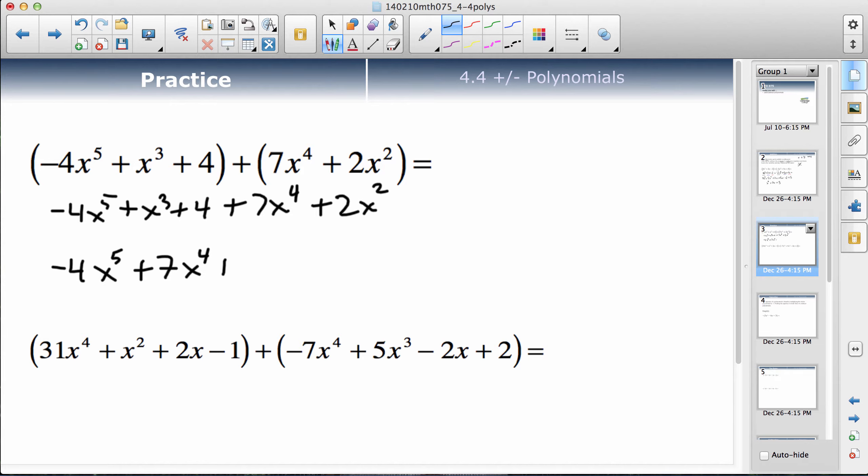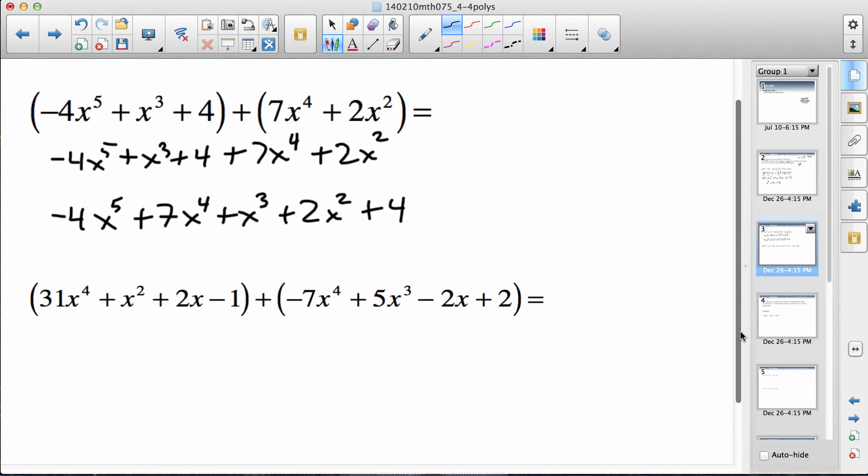x cubed, there's only one of those. x squared, there's only one of those, and a number, there's only one. So actually I didn't add or subtract anything, I just rewrote the polynomial, and this one is in descending order where you have the highest degree first and then the next highest. That's too bad, I didn't get out of anything.